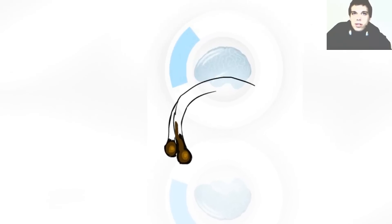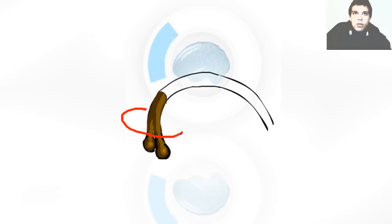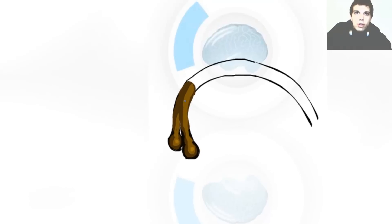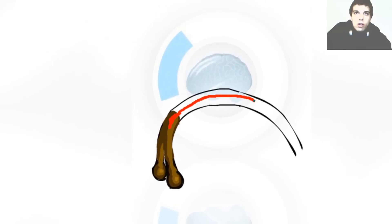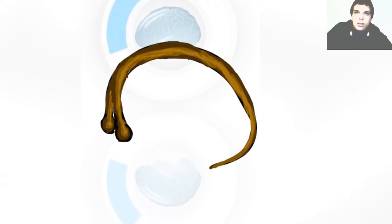Then comes the fornix. The fornix is a C-shaped bundle of fibers. This is the anterior pillar of fornix. These over here are the mammillary bodies, and then fornix 1 and fornix 2. The part where the fornix joins over here is called the body of fornix. Then comes the crus of fornix and the fimbriae.